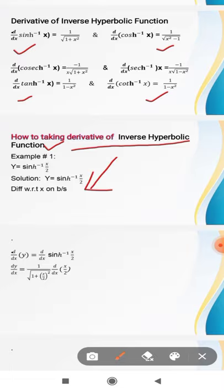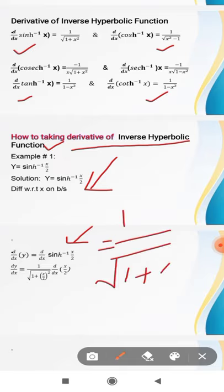How to apply on questions? Taking derivative of sinh inverse x by 2. When we are taking derivative, simply apply the formula: 1 by under root 1 plus x square.